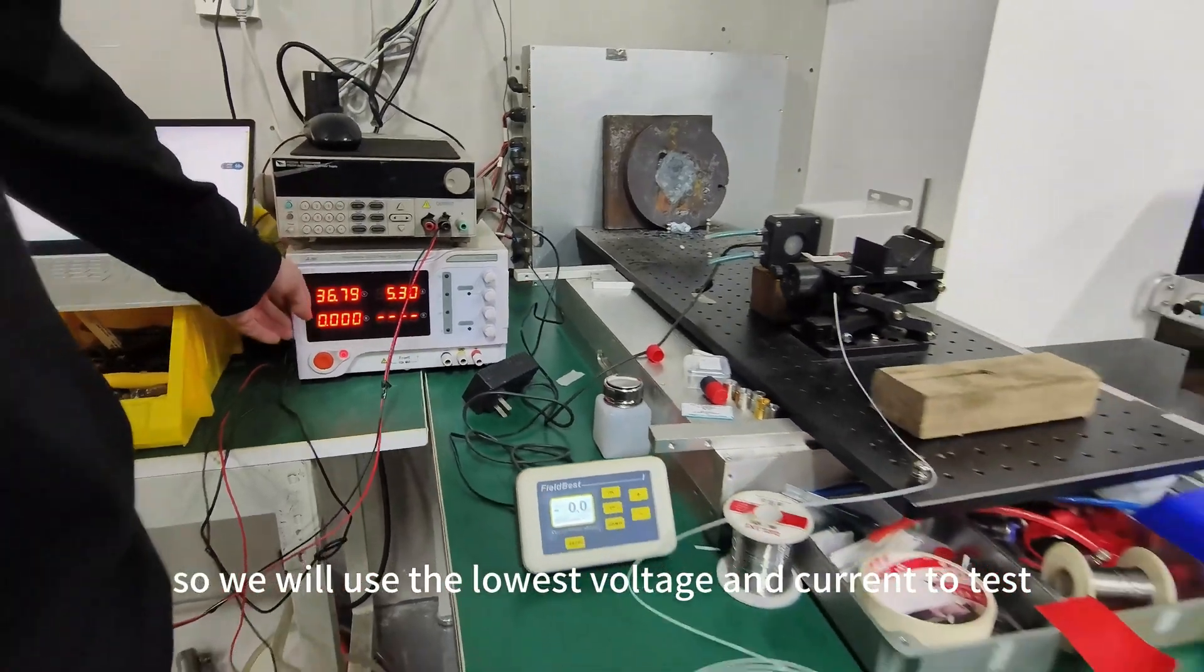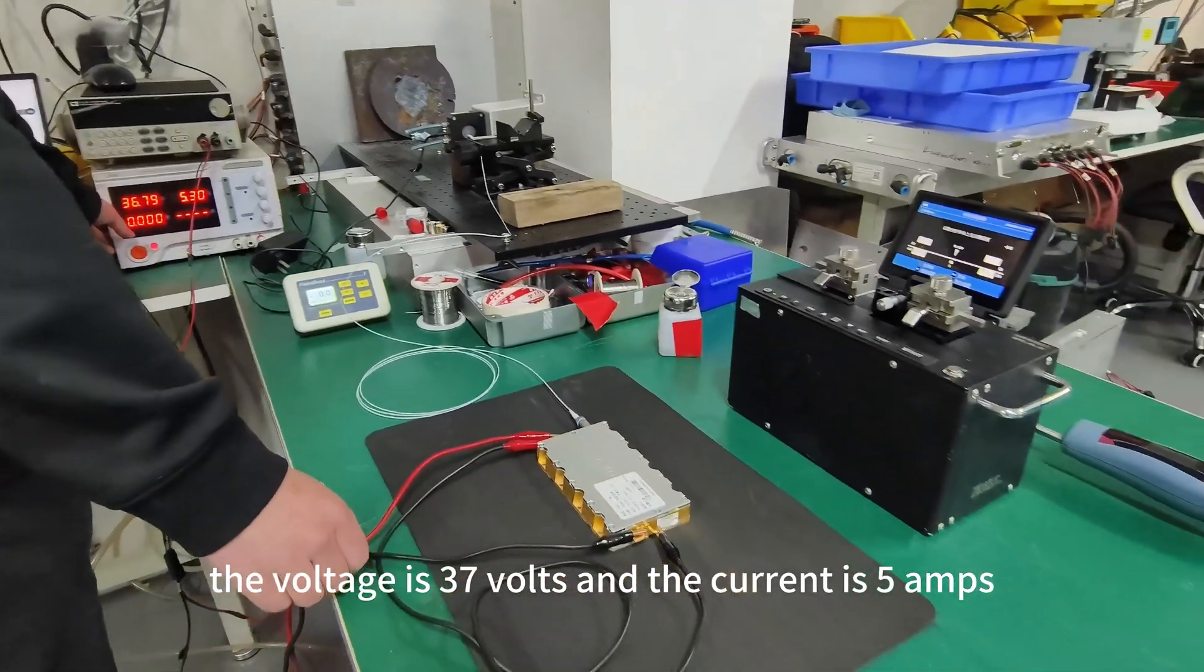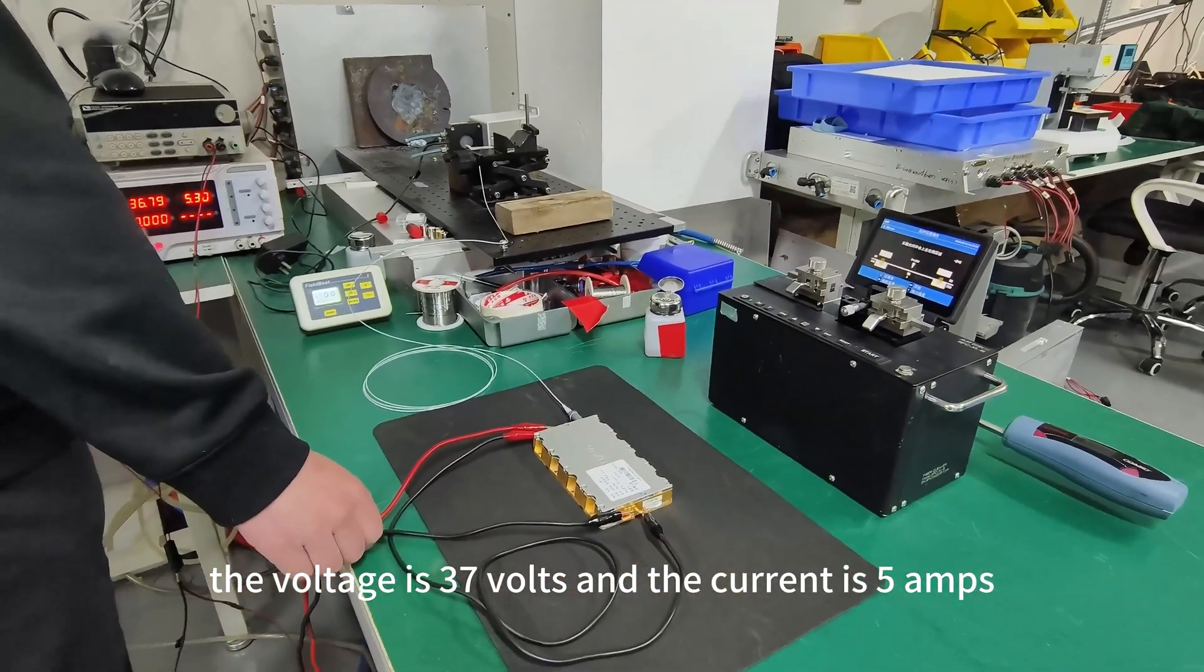There's no water so we will use the lowest voltage and current to test. The voltage is 37 volts and the current is 5 amps.